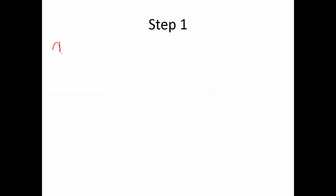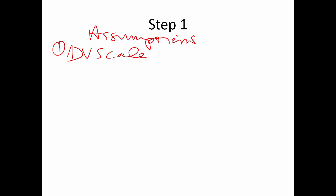Step one: list the assumptions. First, is the dependent variable scale? In this case it's a Likert scale running one to five, which makes it interval — so yes, it's at least scale level.